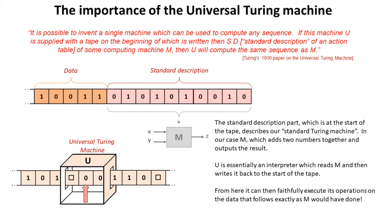U, our universal Turing machine, is now essentially an interpreter, and it reads in the description of M and then writes it back to the start of the tape.